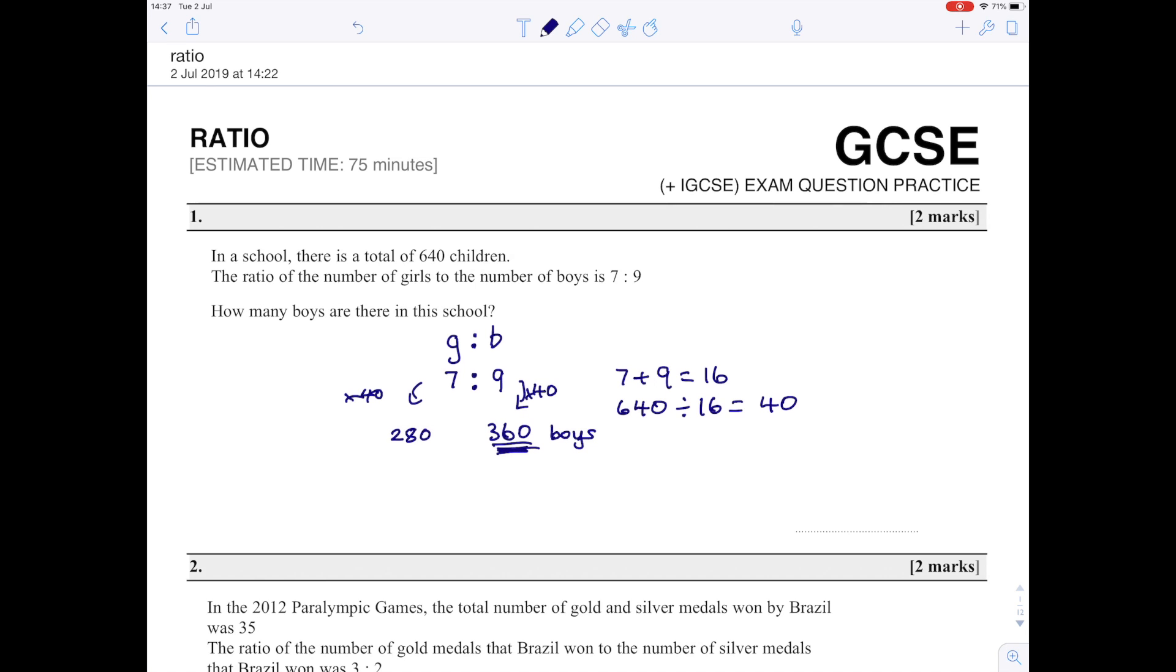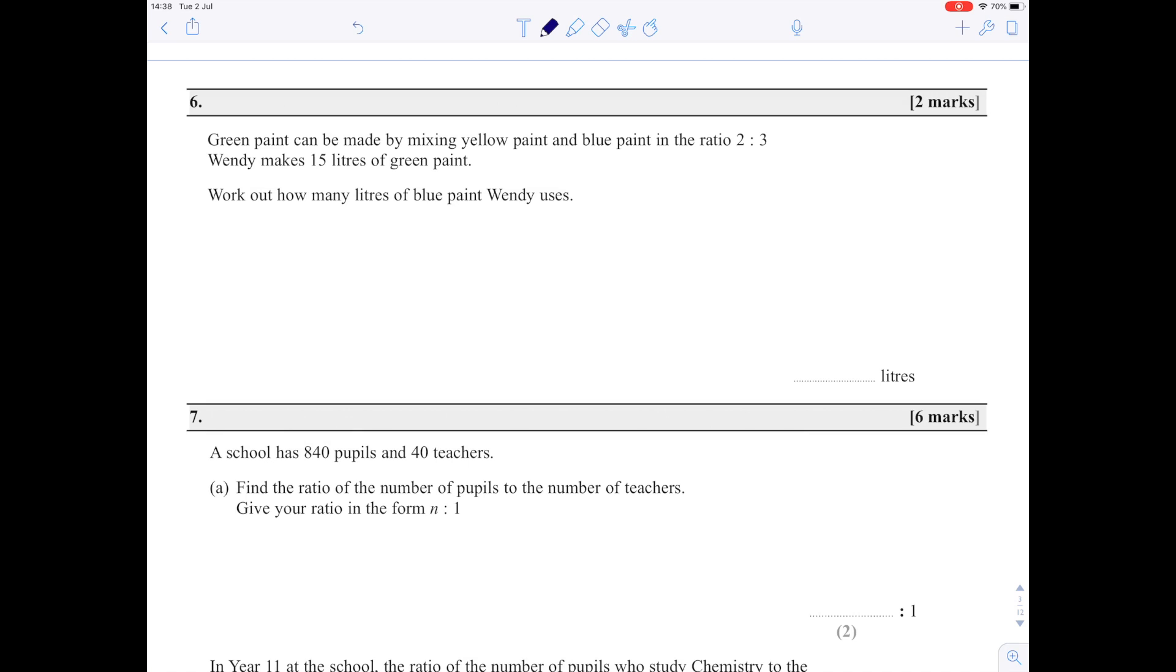Second question: green paint can be made by mixing yellow paint and blue paint in the ratio 2 to 3. So for every 2 parts yellow there's 3 parts blue, giving a total of 5 parts. There's 15 liters of paint all together.